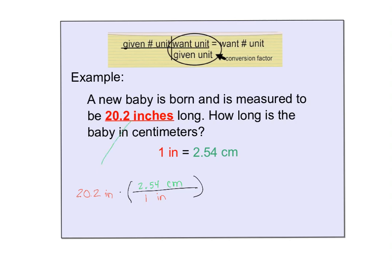Notice this given in the problem here, the equality is what goes in the fraction. When I multiply 20.2 times 2.54 and divide that answer by 1, I get 51.3.